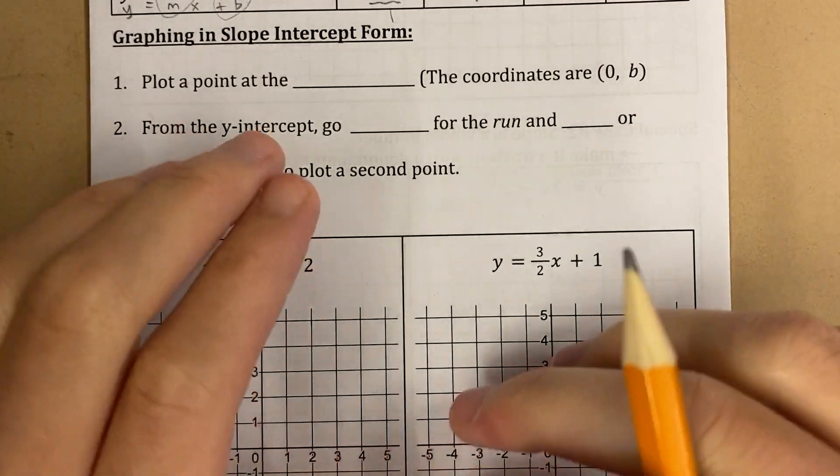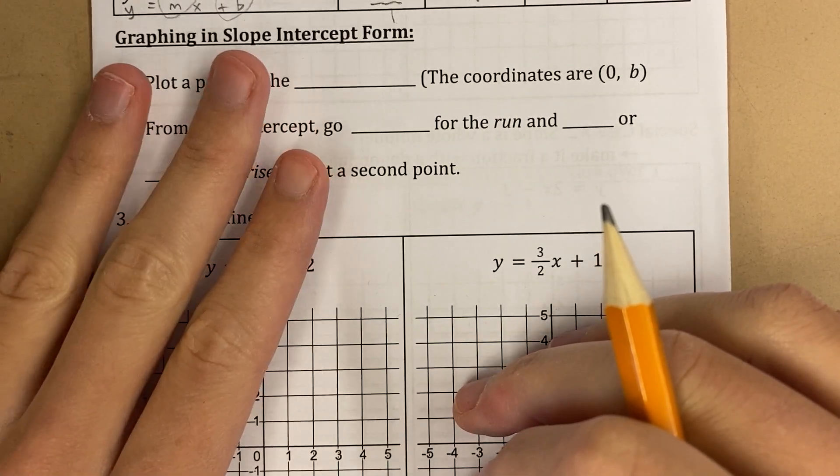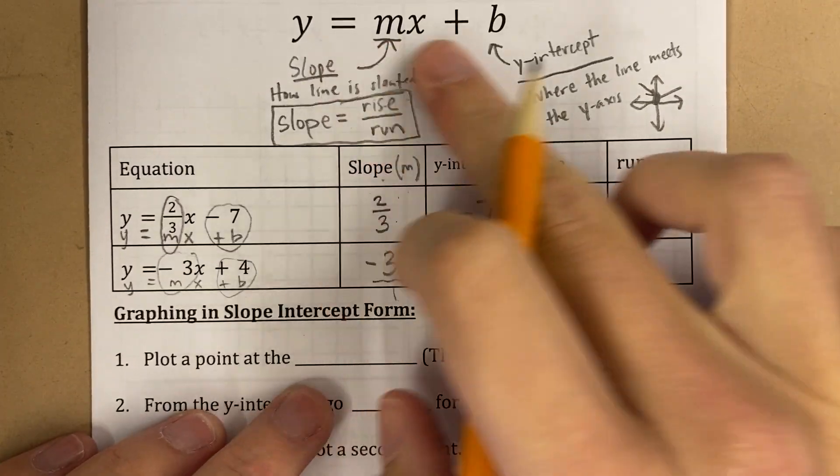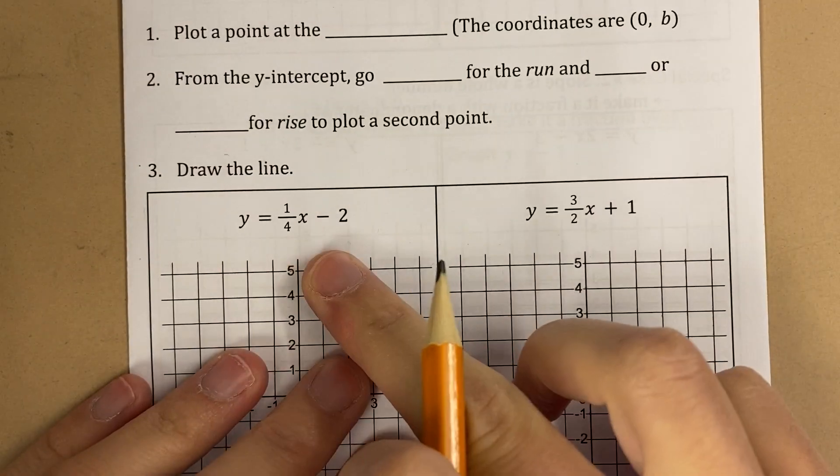All right, let's graph. When I want to graph an equation in slope-intercept form, I have my equation, y equals mx plus b, something like this.